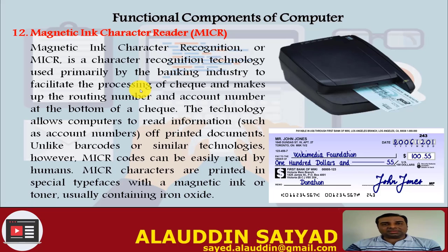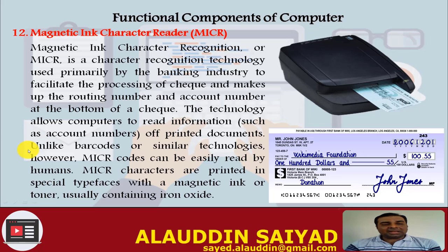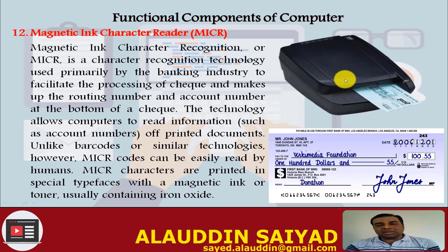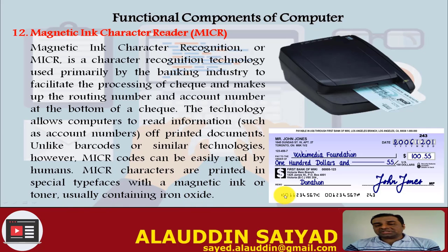MICR stands for Magnetic Ink Character Reader. Magnetic Ink Character Recognition (MICR) is a character recognition technology used primarily by the banking industry to facilitate processing of checks, making up the routing number and account number at the bottom of a check. It allows computers to read information such as account numbers from printed documents. Unlike barcodes, MICR codes can be easily read by humans. A bank check placed in the device will have its account number and check number automatically read and verified for authenticity. The characters are printed with a special typeface using magnetic ink or toner usually containing iron oxide.